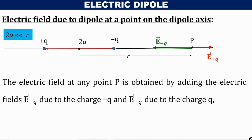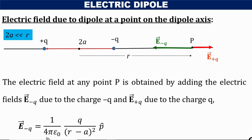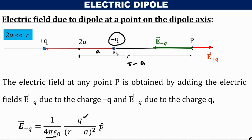Using the principle of superposition, we find the net electric field. The magnitude of the electric field at P due to minus Q is: 1 by 4π epsilon naught times Q divided by (R minus a) squared — since the distance between minus Q and P is R minus a. Similarly, the magnitude of the electric field due to the positive charge is 1 by 4π epsilon naught times Q divided by (R plus a) squared.